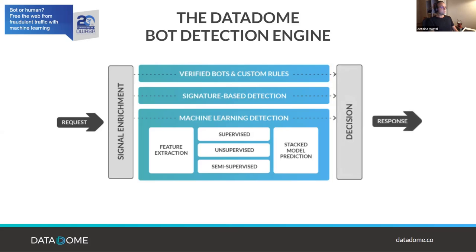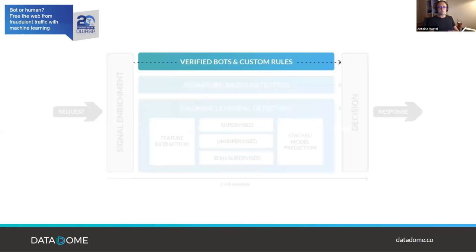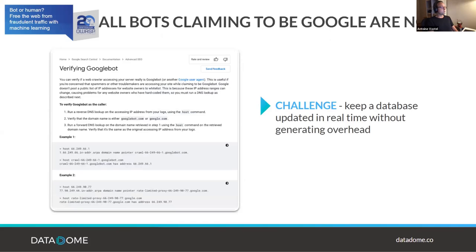Verified bot authentication is an often underestimated task because attackers commonly lie about their identity. According to our statistics, around 30 percent of all bots claiming to be Googlebots are not. They hijack the official Googlebot user agent and use IP addresses from Google Cloud Platform. Applying Google's own authentication recommendations in real time can be cumbersome, which is why DataDome maintains an in-memory database of bot patterns to reliably authenticate good bots.